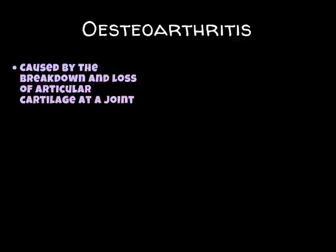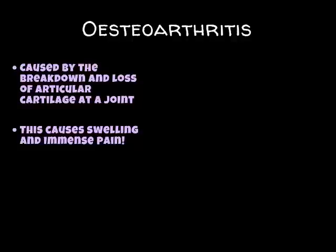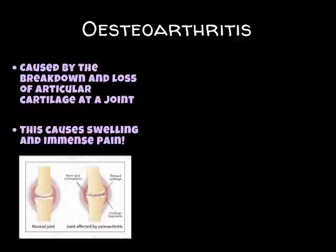Osteoarthritis sounds similar to osteoporosis but is different — it relates to the joints in your body. Osteoarthritis is caused by the breakdown and loss of articular cartilage at a joint. At the ends of our bones we have cartilage which acts as a shock absorber between the two bones that meet. When that cartilage wears down, the two bones grind on each other where the joints meet. Rather than moving smoothly against the cartilage, the bones end up grating on each other, causing swelling of the joint and immense pain. As shown in the diagram, the normal joint on the left has healthy cartilage, while the joint on the right shows cartilage that has started to thin out, causing the bones to rub against each other — for example, at the knee or under the patella.